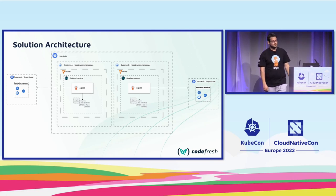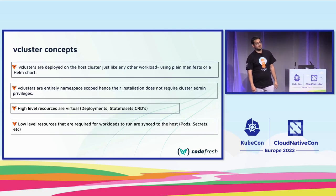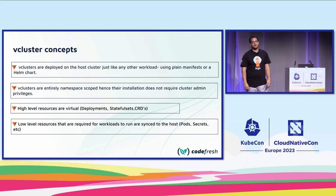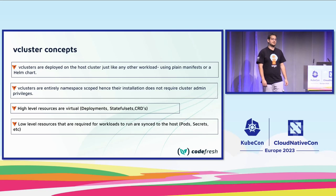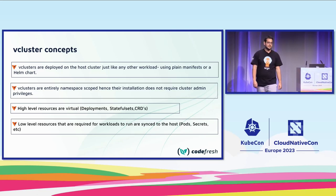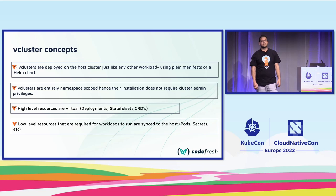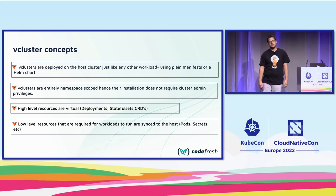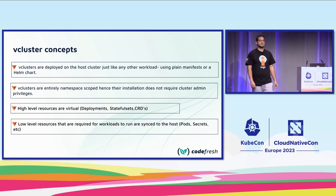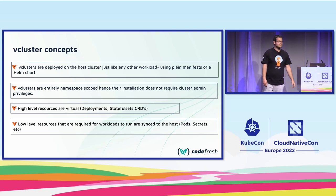Let's explore some vCluster concepts. vClusters are deployed onto the host cluster like any other Kubernetes manifest — you can use plain manifests or their official Helm chart. They are entirely namespace-scoped, so you don't require cluster admin privileges. High-level resources are entirely virtual, existing only in the vCluster's API. Low-level resources absolutely necessary to execute workloads — like pods, secrets, and config maps mapped into pods — exist on the host cluster and are synced by the syncer.